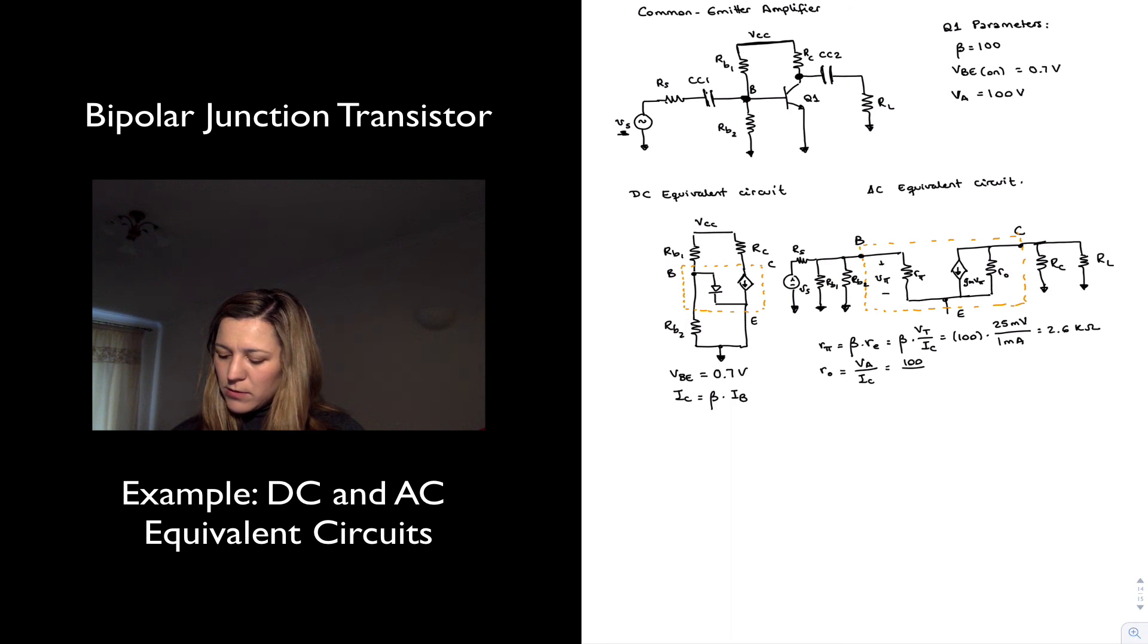And that gives me 2.6 kilo-ohms for Rpi. My little ro is VA, the early voltage divided by my DC collector current. So 100 divided by, for example, 1 milliamp. That will be 100 kilo-ohms for little ro. And gm is IC over VT. So 1 milliamp divided by 25 millivolts or 0.038 amps per volt. It has units of conductance, or we could have said 38 milliamps per volt. And I'll just carry it through with the operations to give you a sense for the values of those small signal AC parameters.